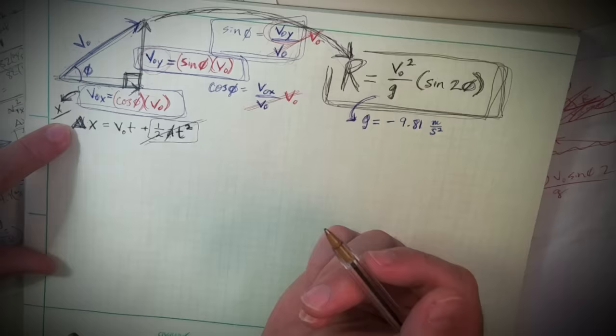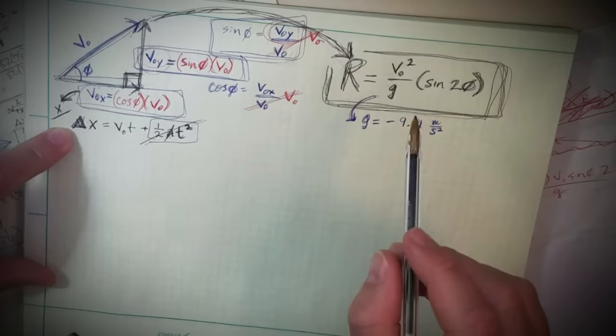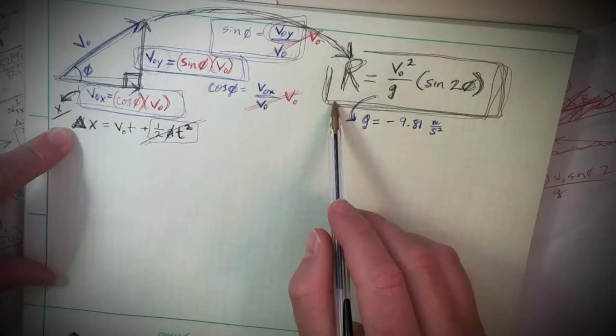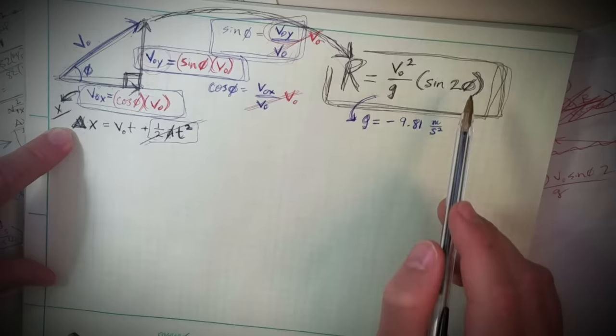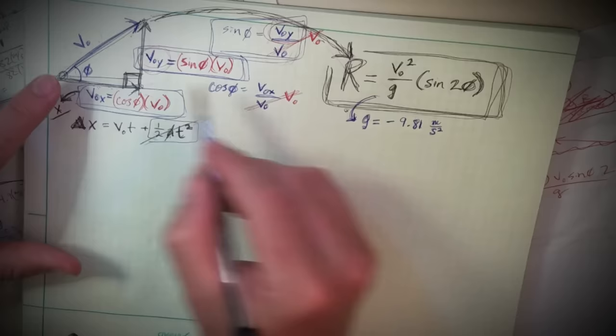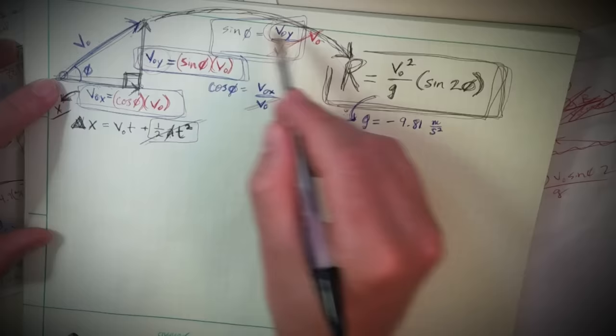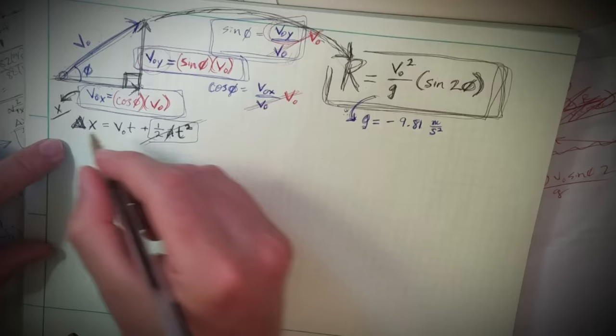We're left with: the change in x, which we'll call R - the range. The range of the projectile starting with this velocity shot at this angle equals the distance from here to here, assuming it ends at the same height as its initial height. This equation won't work if it lands at a different height.